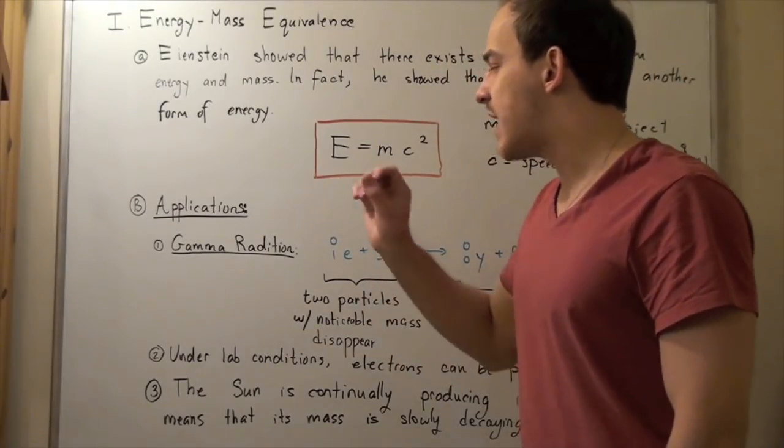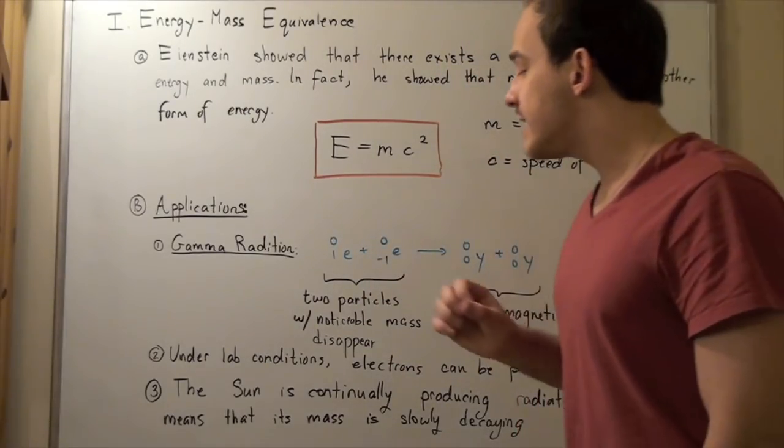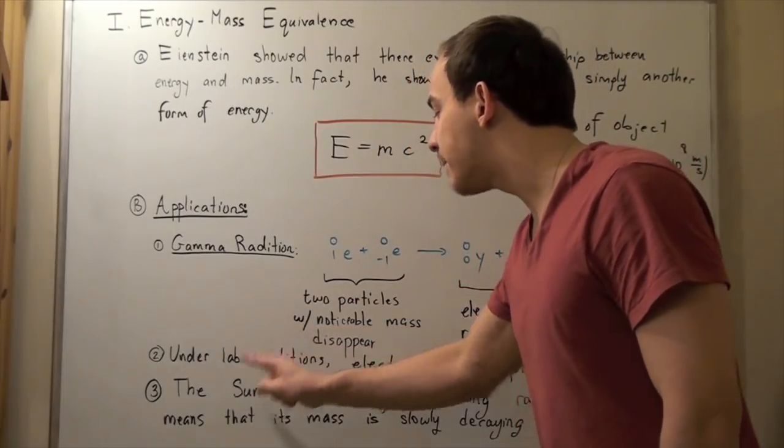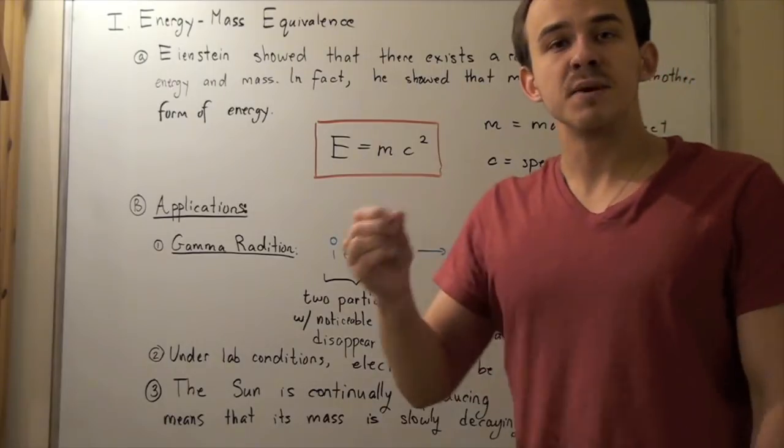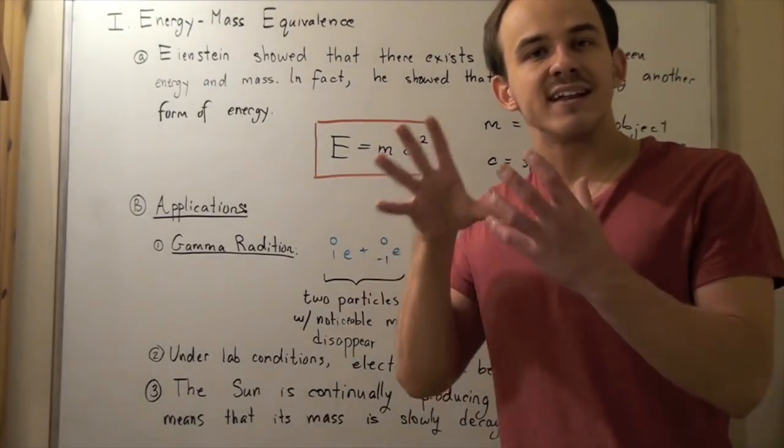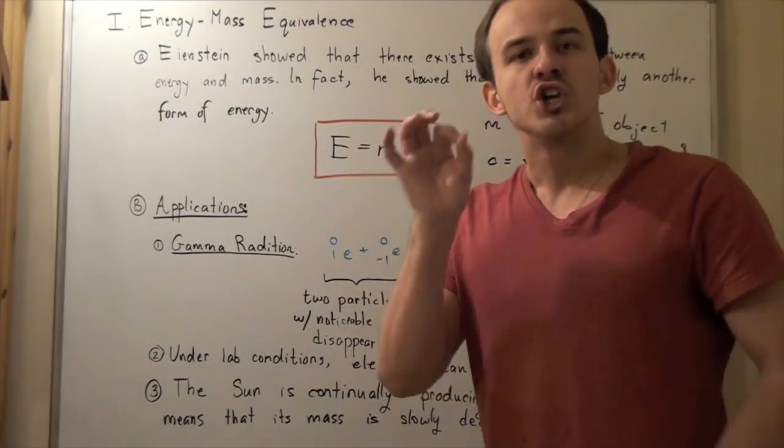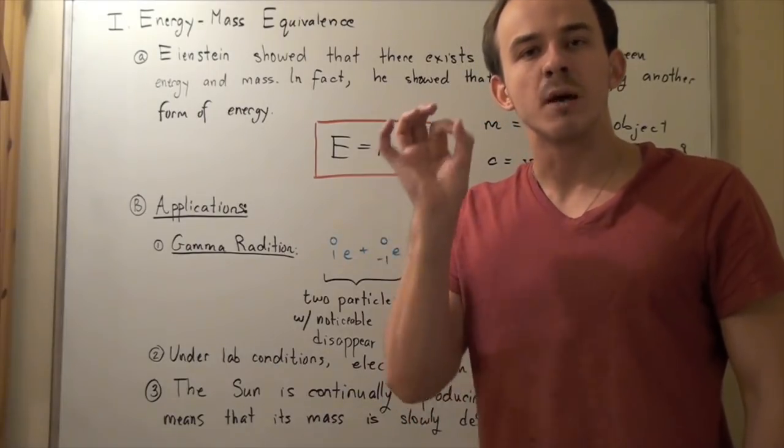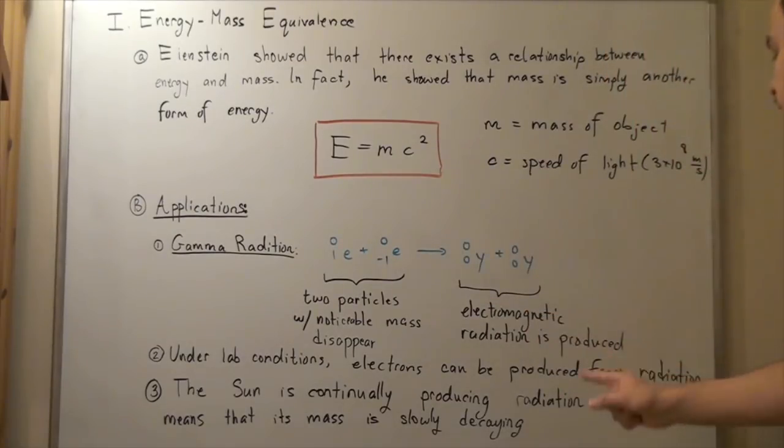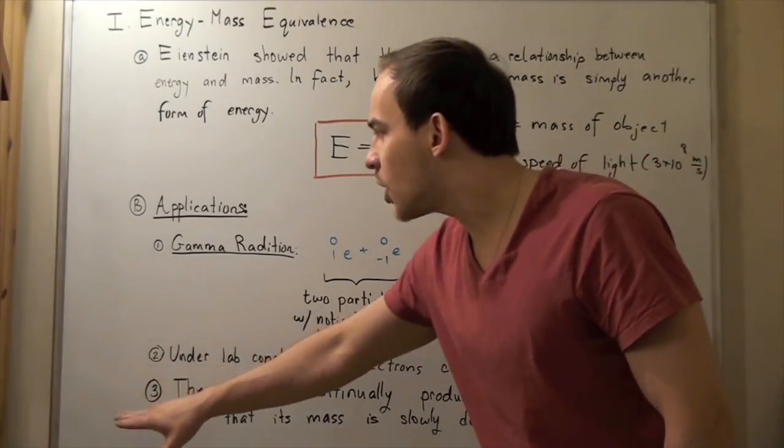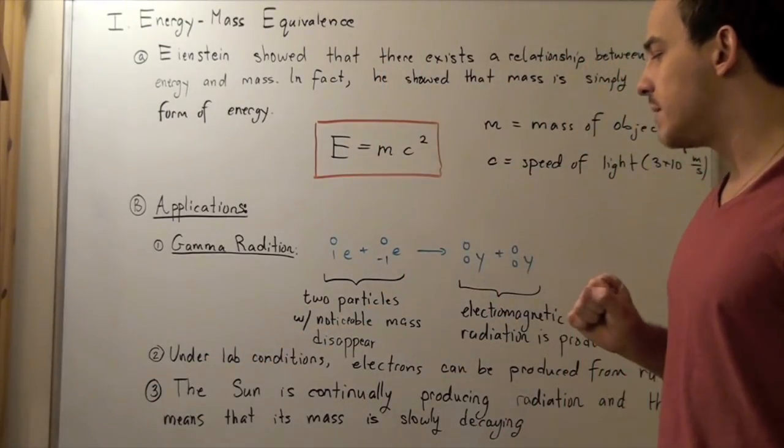A second type of application or example is the following. Under lab conditions, the reverse of this is true. It has been observed that if you take electromagnetic radiation, you can, in fact, produce subatomic particles. Scientists were able to produce electrons from electromagnetic radiation. Let's look at a third example of this formula.